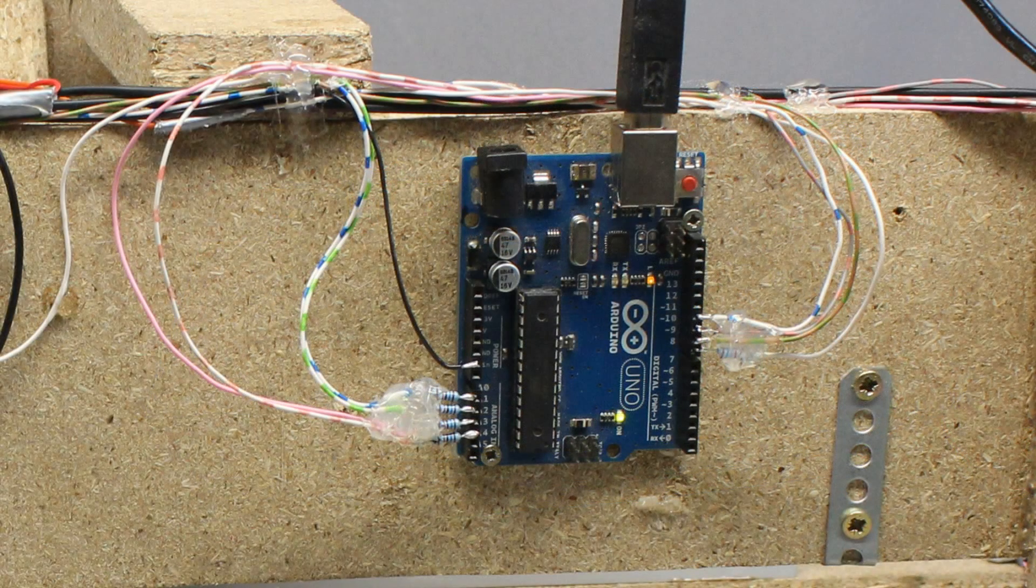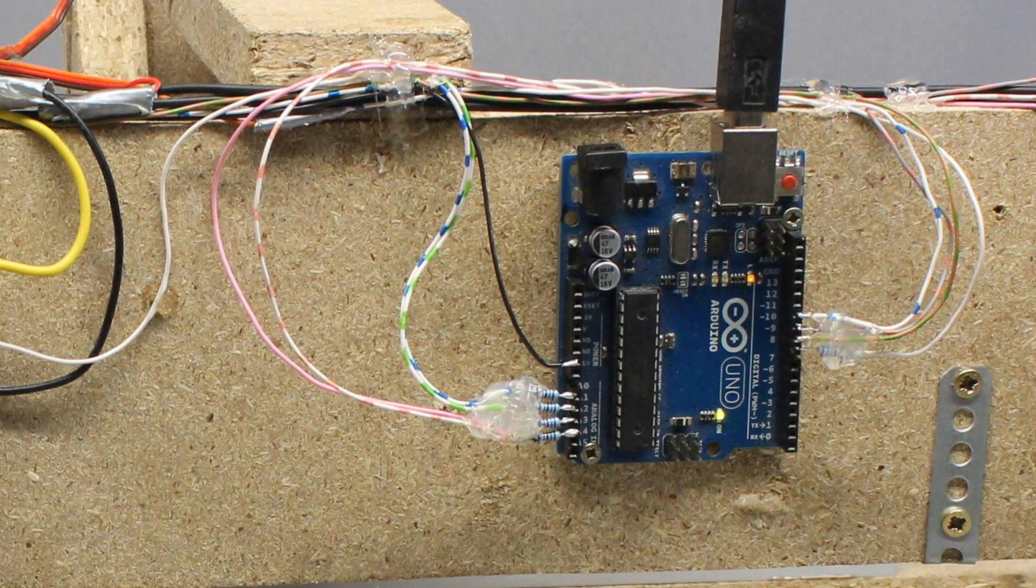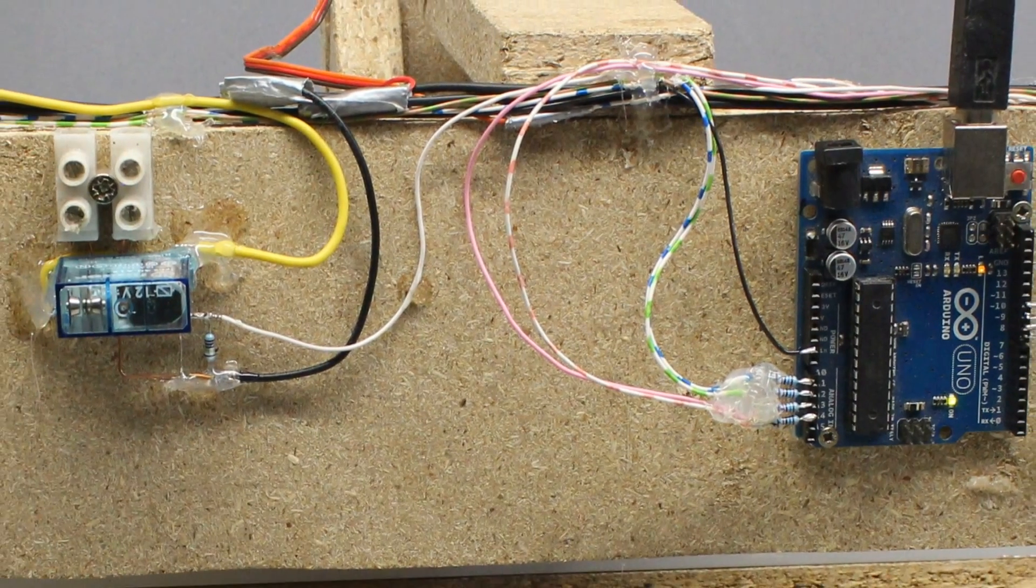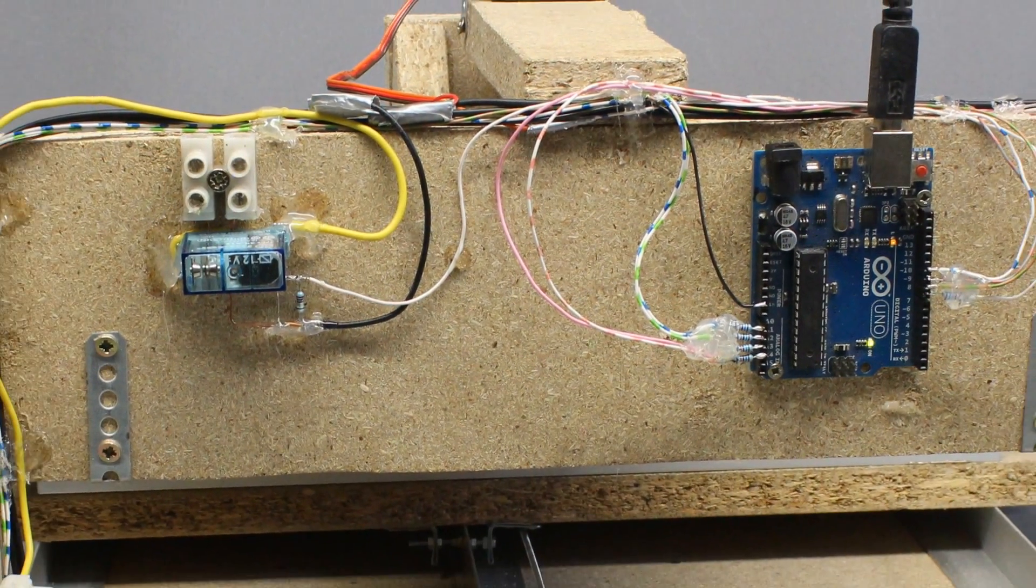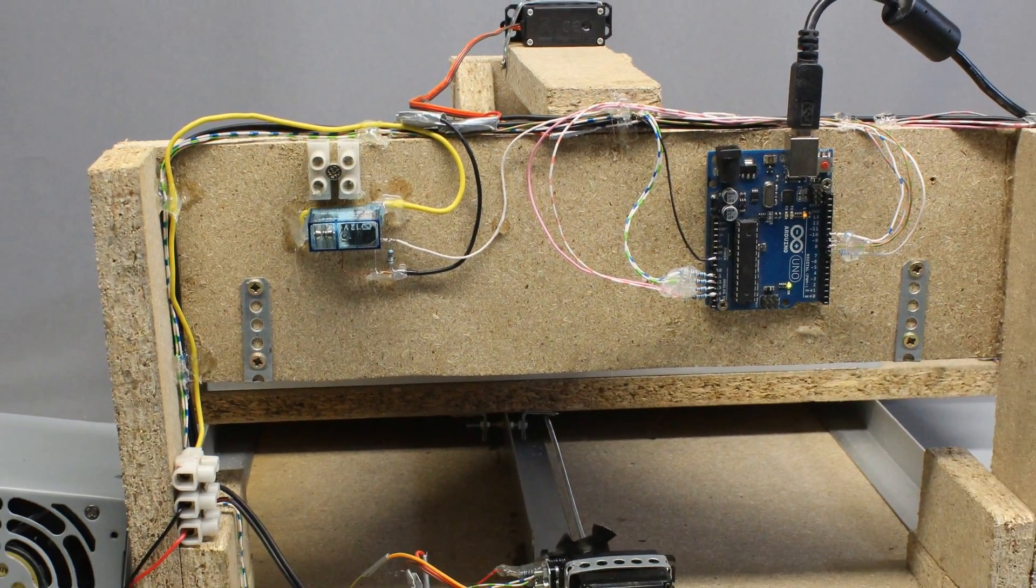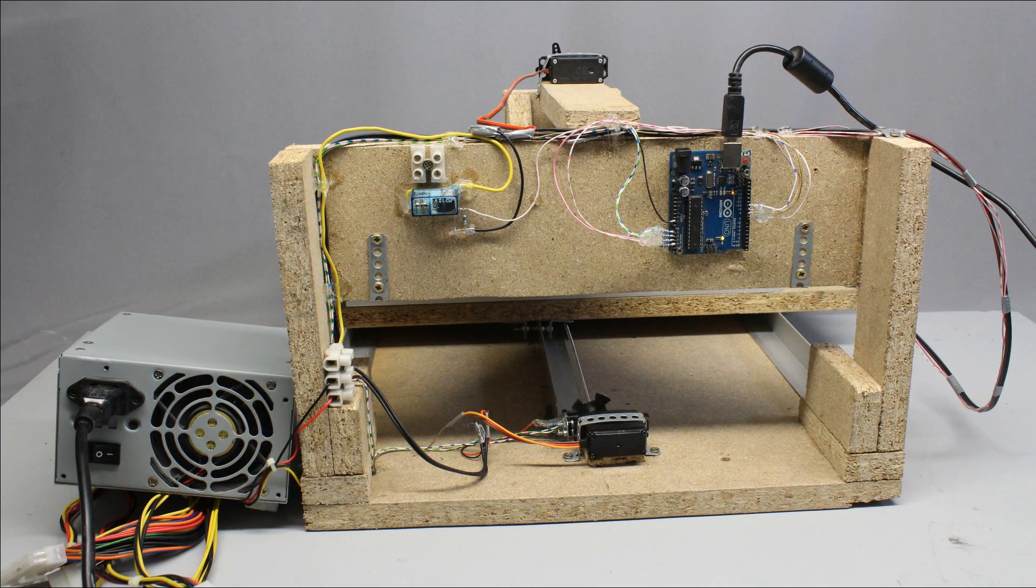The Arduino is mounted at the back side of the CNC machine. There is a 12V relay used to switch the router. The relay is controlled by the Arduino through a small signal transistor. An old computer power supply feeds the machine with electricity.